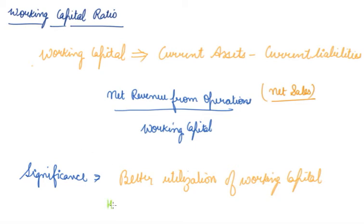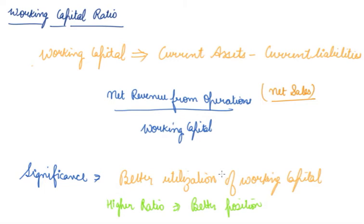A higher ratio means a better position — better utilization of the working capital of the company. This ratio is of particular importance in non-manufacturing concerns where current assets play a major role in generating revenue from operations. It reveals how efficiently working capital has been utilized in generating net sales and shows the number of times working capital has been rotated in producing the revenue from operations.